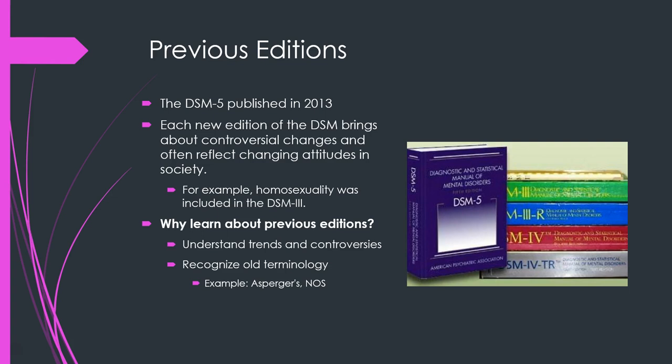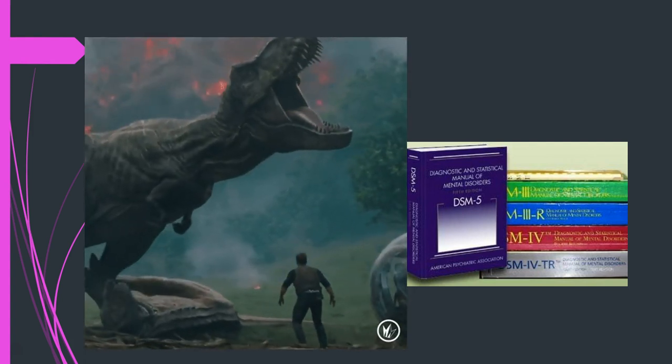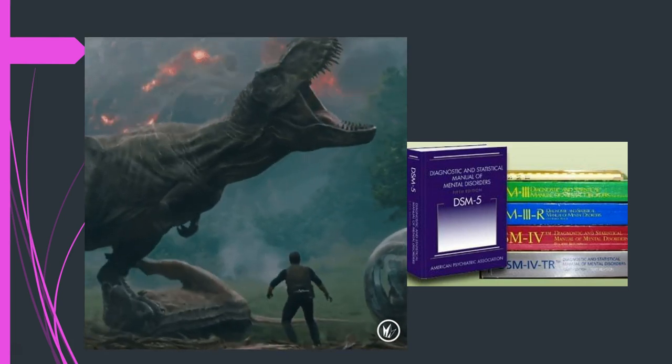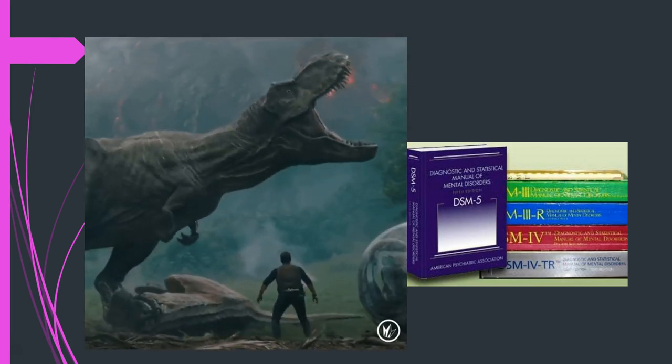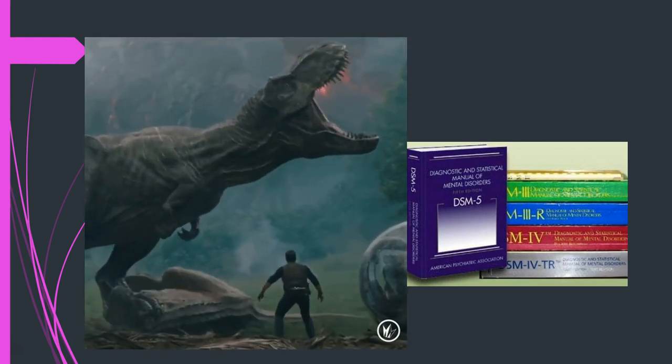You may still hear people referring to Asperger's, so it's helpful to know that's from DSM-4 and is no longer used currently. Another example is NOS — not otherwise specified — an acronym used frequently in DSM-4 that is not in the DSM-5. The lesson here is not to be a diagnostic dinosaur: keep up to date with changes in the DSM and don't be caught using old terminology.